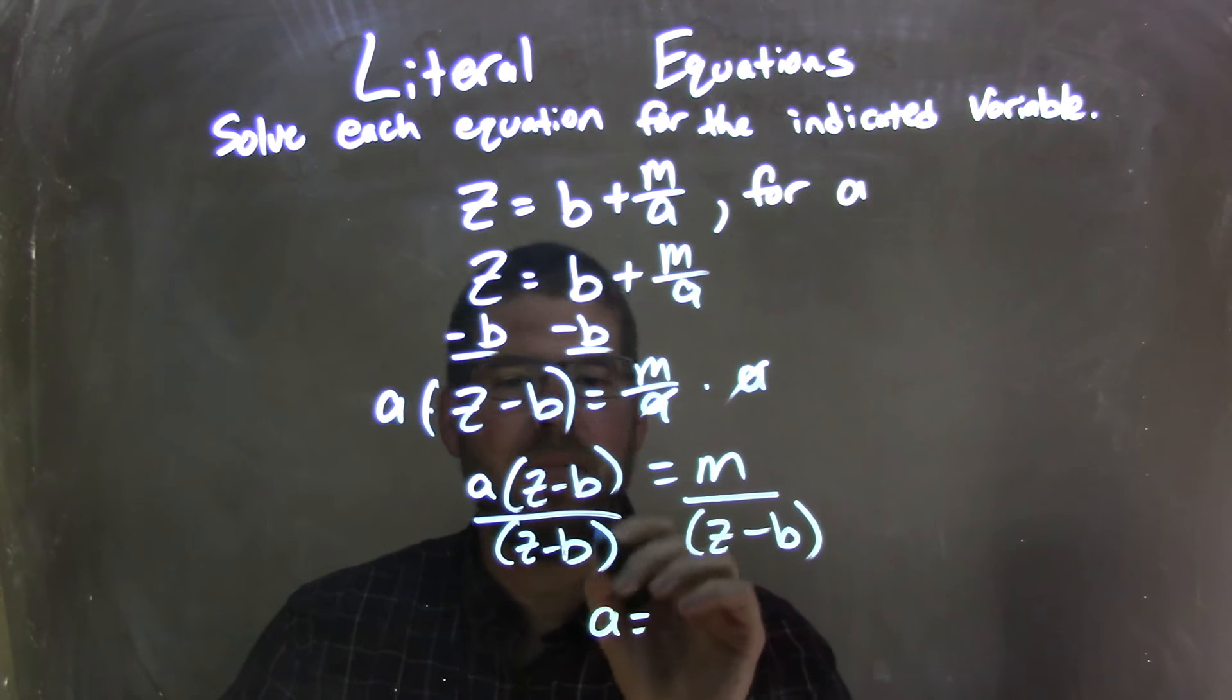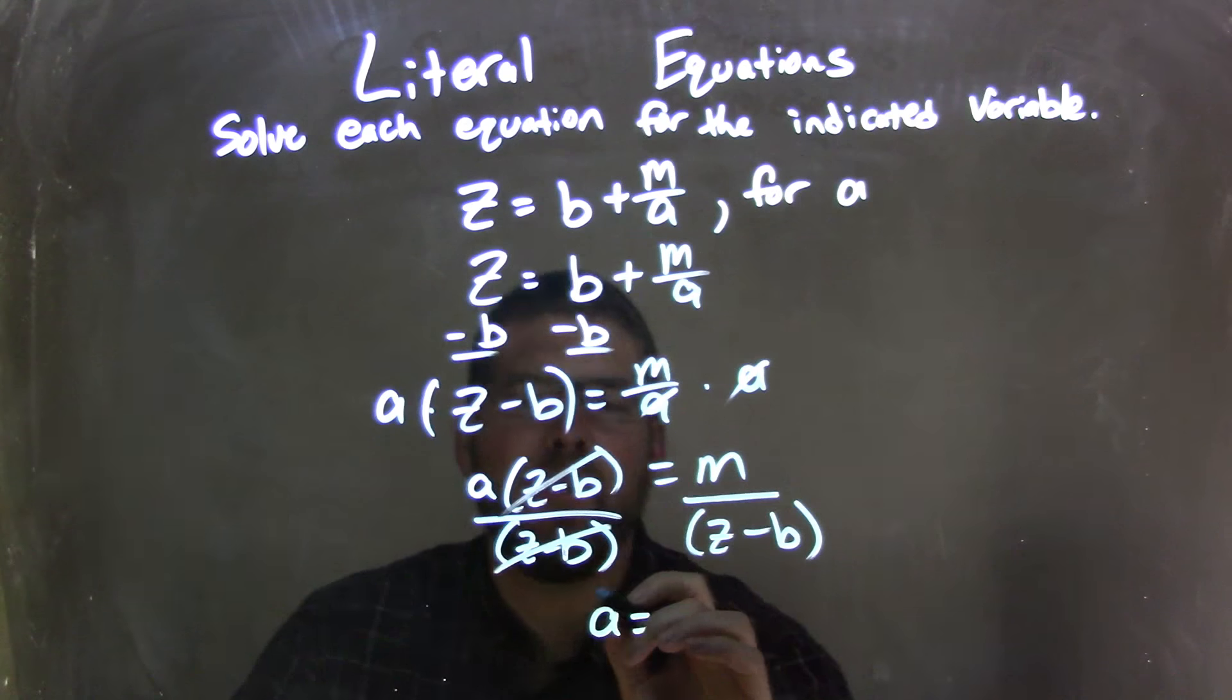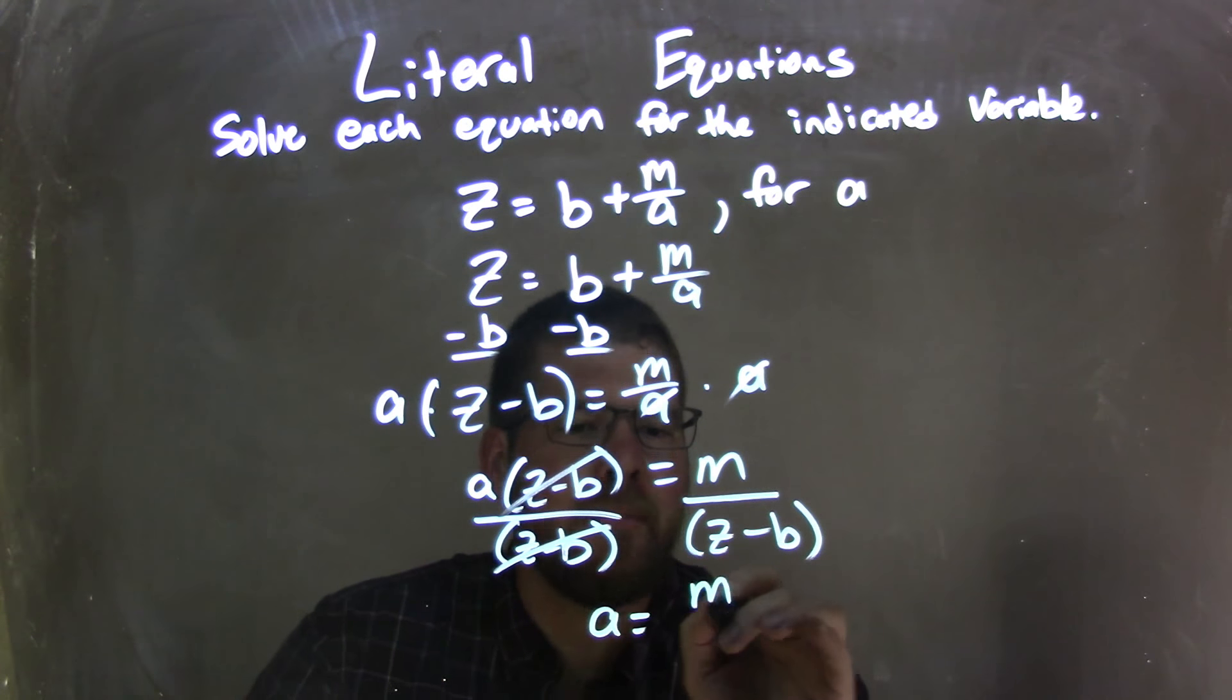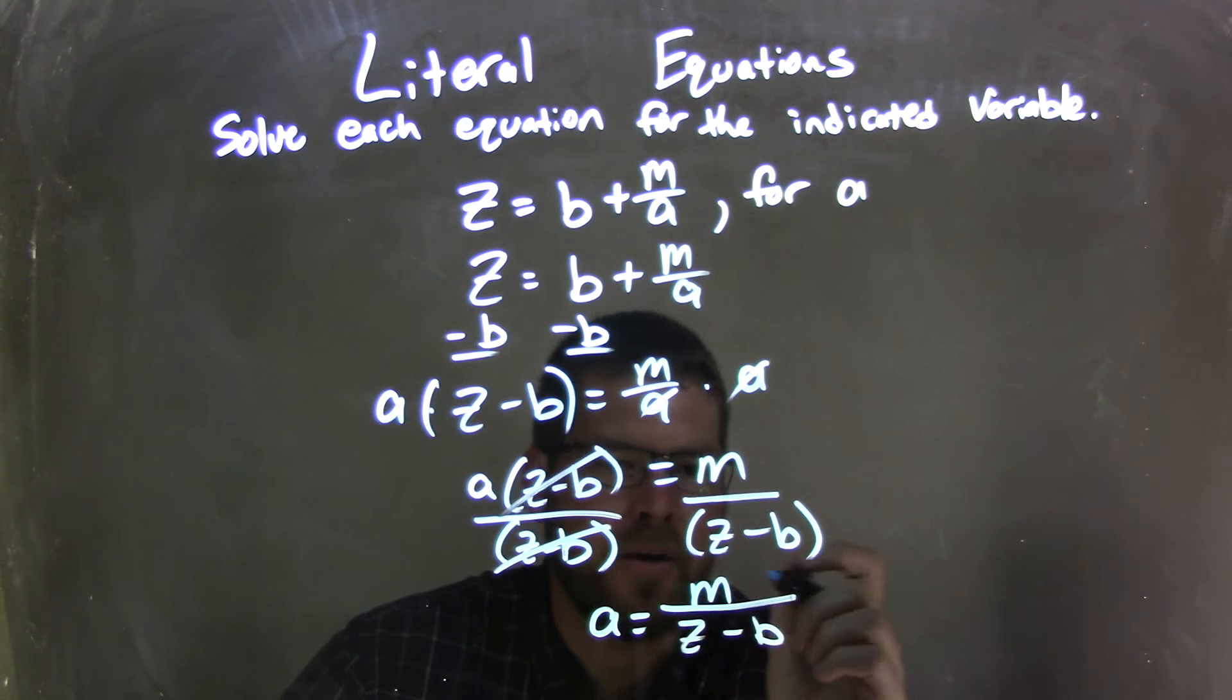And what that does, it leaves me with an a by itself, because the z minus b cancels. a by itself on the left equals m on the right over z minus b. m over z minus b, and there we go.